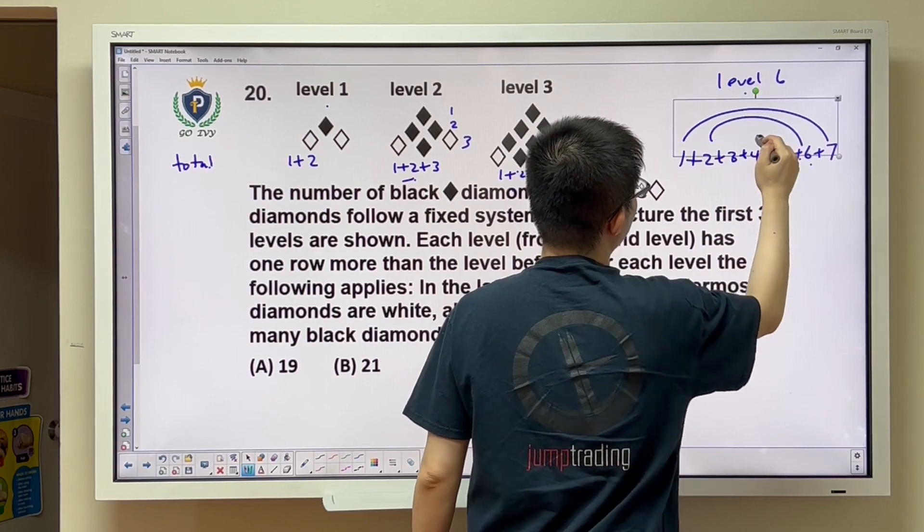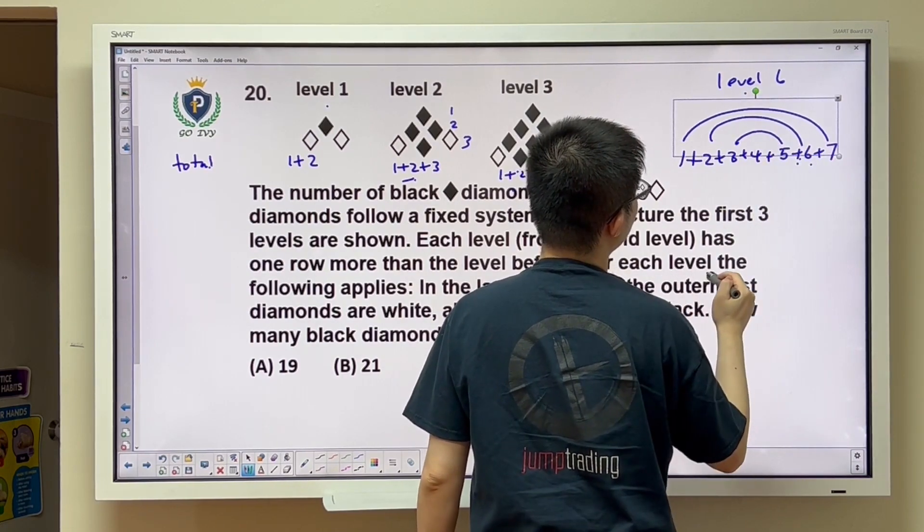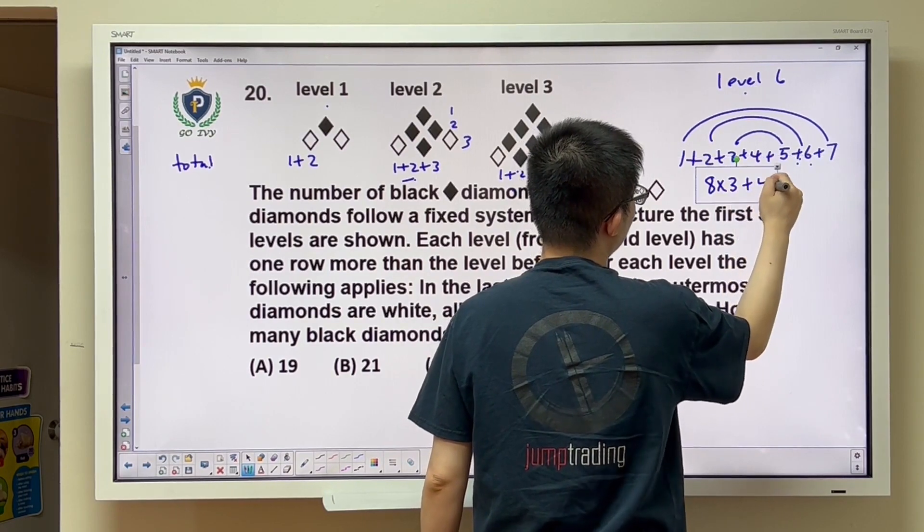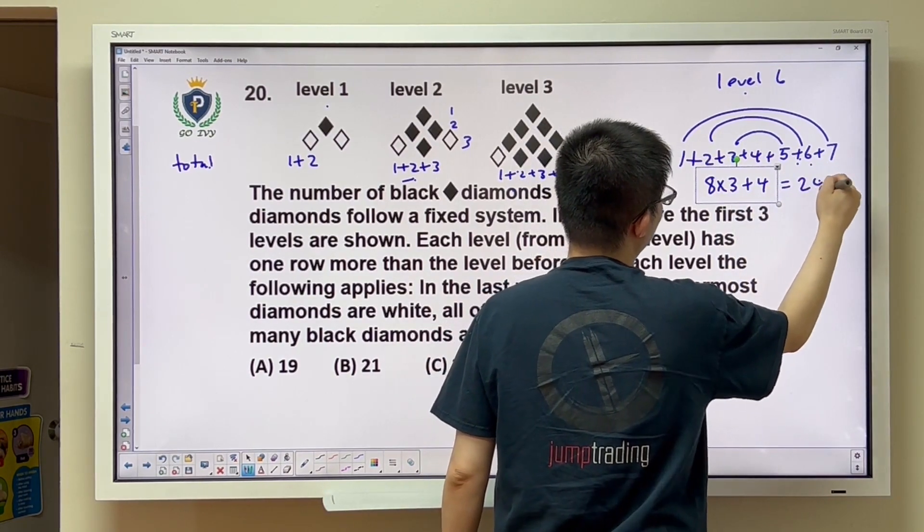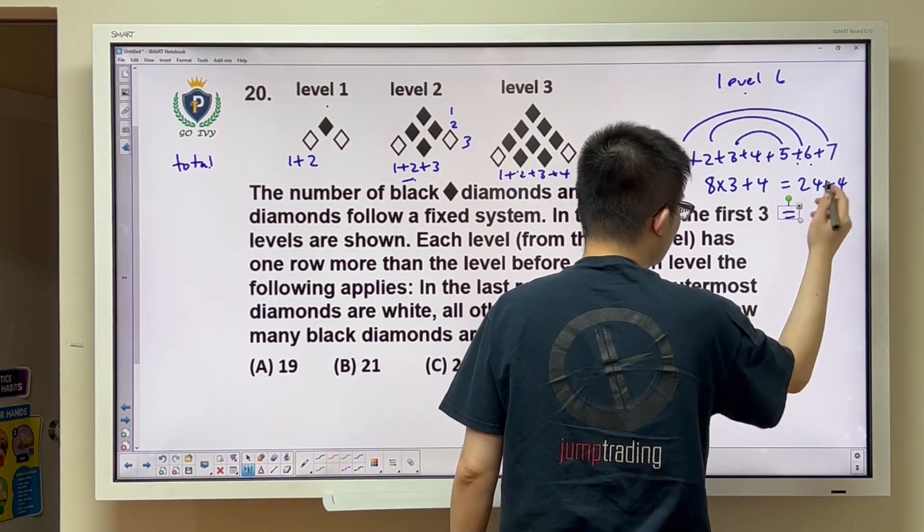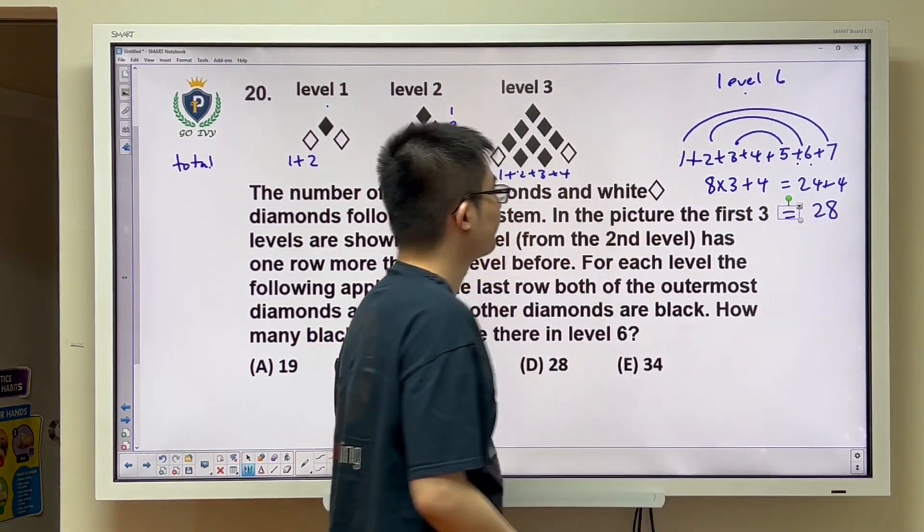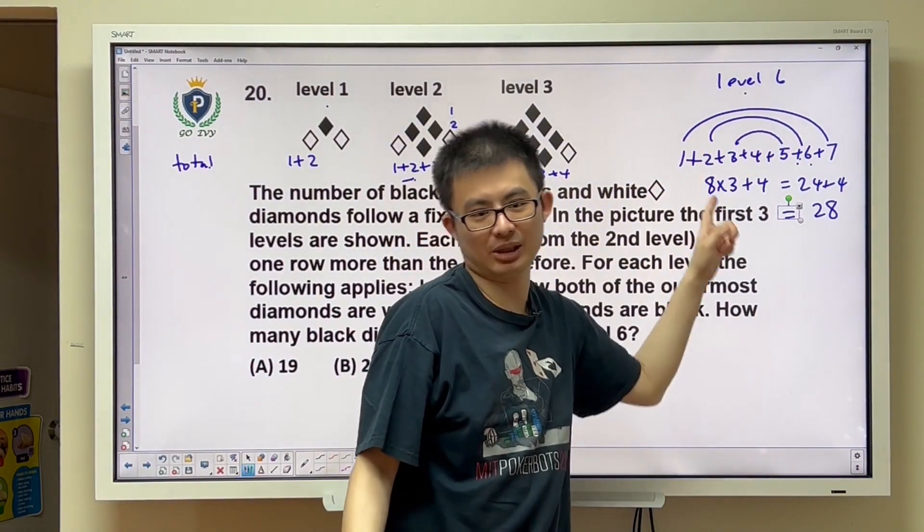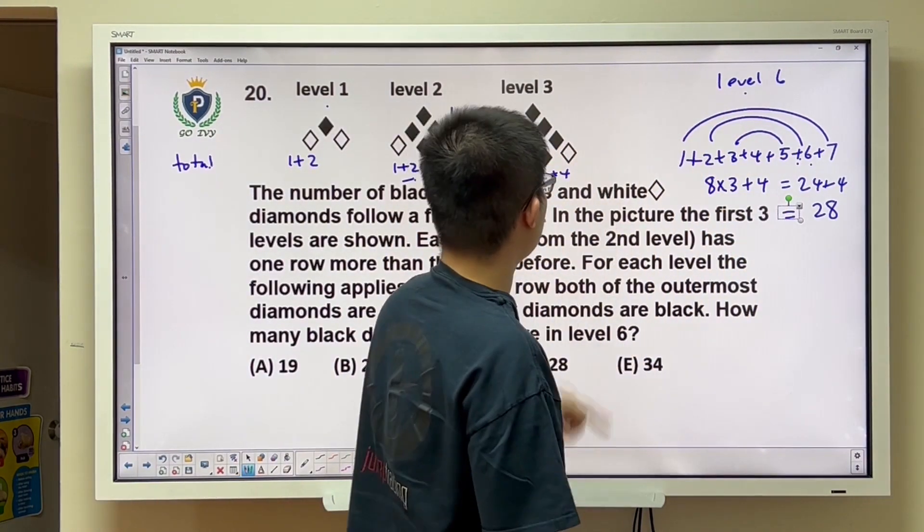If we pair them up, we have 8 times 3 plus 4. And that is equal to 24 plus 4, and that is equal to 28. Therefore, in level 6, there are going to be 28 of these diamonds.